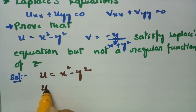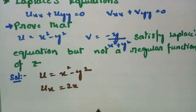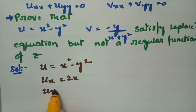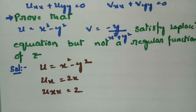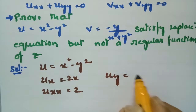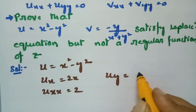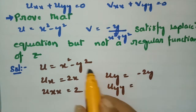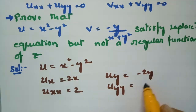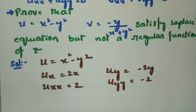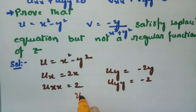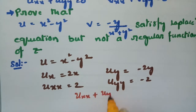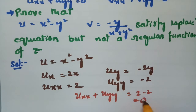If I differentiate u with respect to x, this is 2x. If I again differentiate with respect to x, this is 2. So uxx = 2. If I differentiate with respect to y, this is -2y. If I differentiate again with respect to y, this is -2. So uyy = -2. Therefore, uxx + uyy = 2 + (-2) = 0.